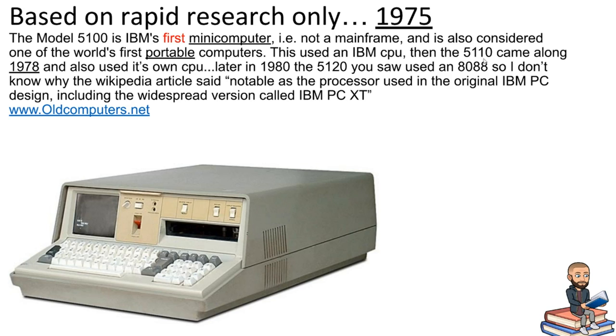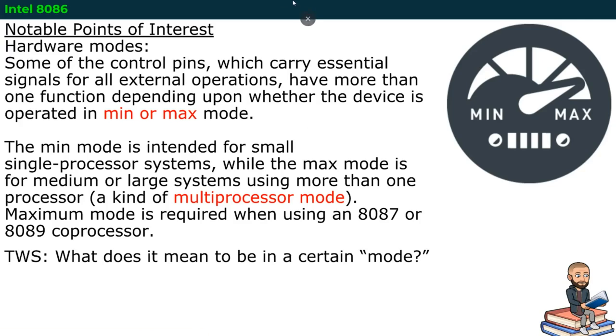When the 5110 came along three years later, 1978, that thing also used IBM's CPU. But by the time we get into the 1980s, that next version, that's when we're going to start seeing 8088 chips placed in the IBM computers. And if you go to this website, you could do a lot of research on the old computers.